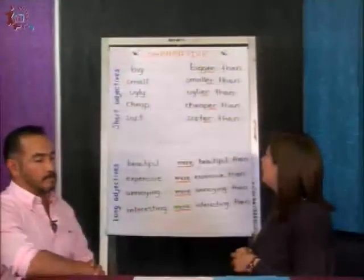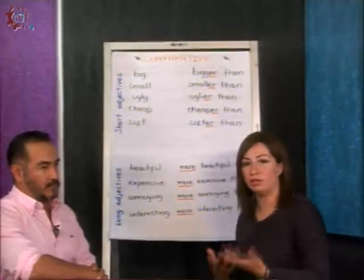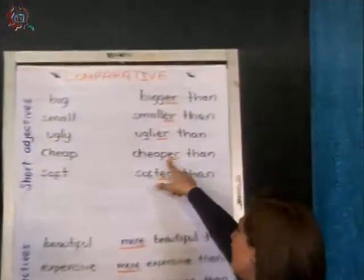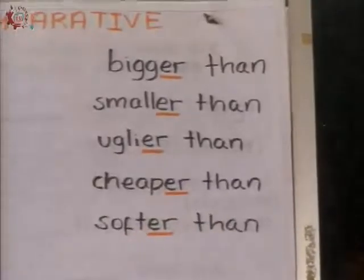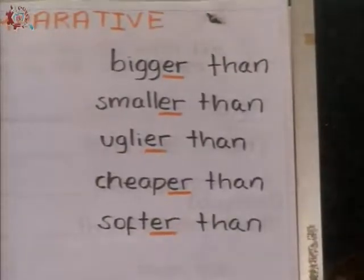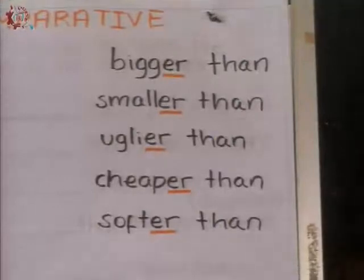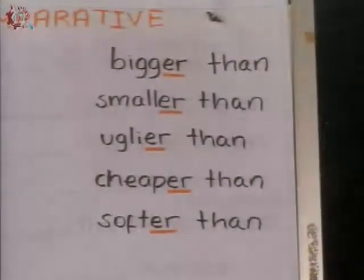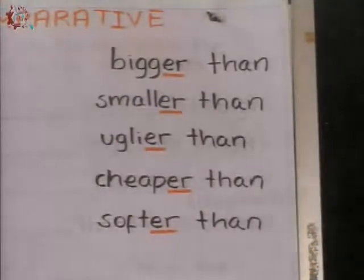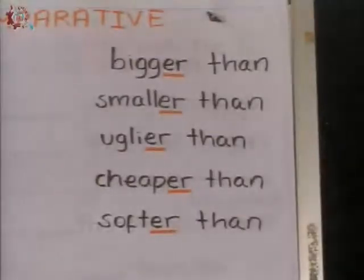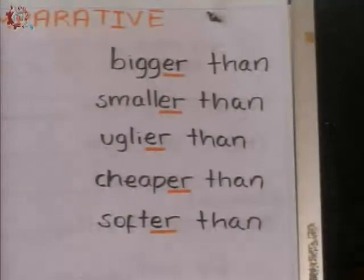Tenemos una regla: ¿cómo los hacemos comparativos cuando tenemos adjetivos cortos? Lo que vamos a agregar es la terminación -ER. En lugar de decir big, decimos bigger than — más grande que. Small → smaller than, más pequeño que. Ugly → uglier than, más feo que. Cheap → cheaper than, más barato que. Y soft → softer than, más suave que.